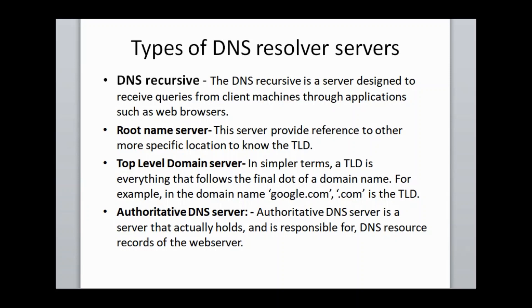The second type is the root name server. This is a reference server that provides the specific location of the URL, and it basically provides information about the TLD — the Top Level Domain server. The third type is the Top Level Domain server. In simple words, a TLD is everything that comes after the dot, such as dot com or dot org.